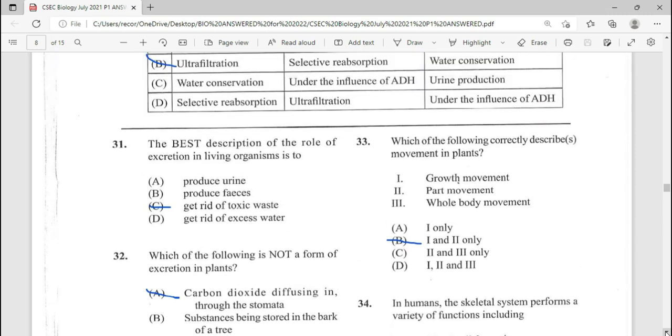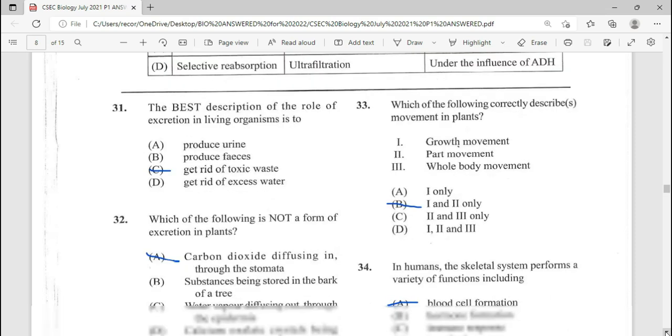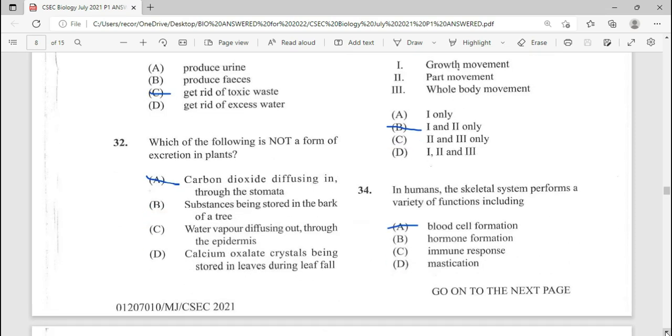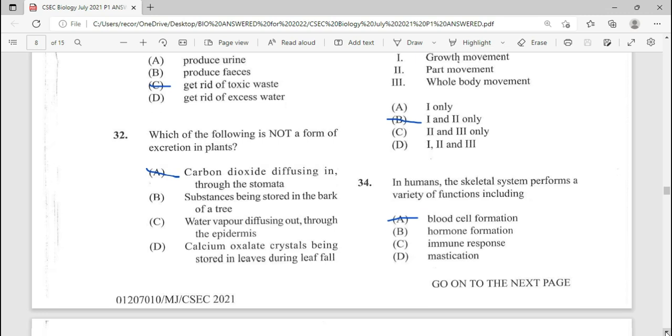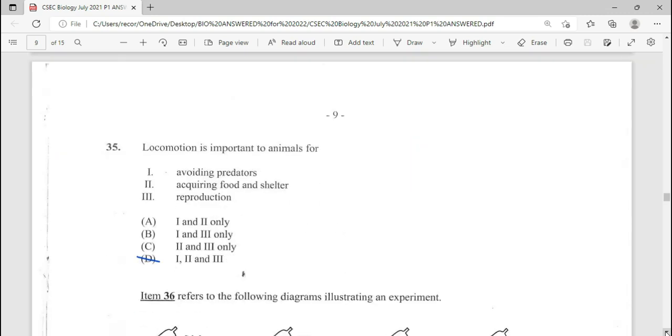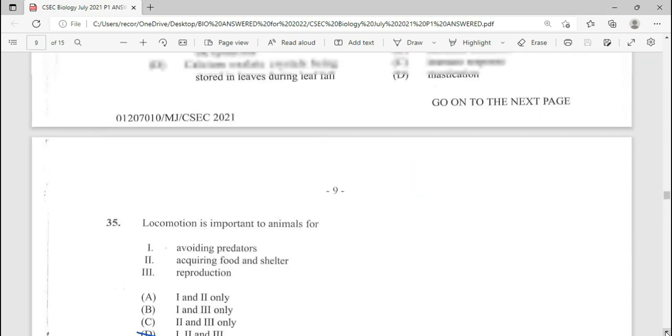33, which of the following correctly described the movement in plants? Of course, we chose B as our answer. 34, in humans, the skeletal system performs a variety of functions, including A, blood cell formation. In 34, our answer there is going to be A.